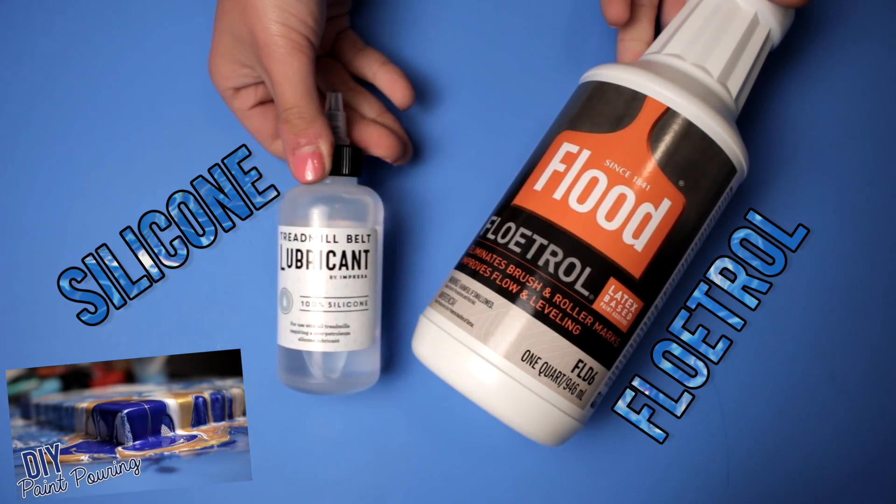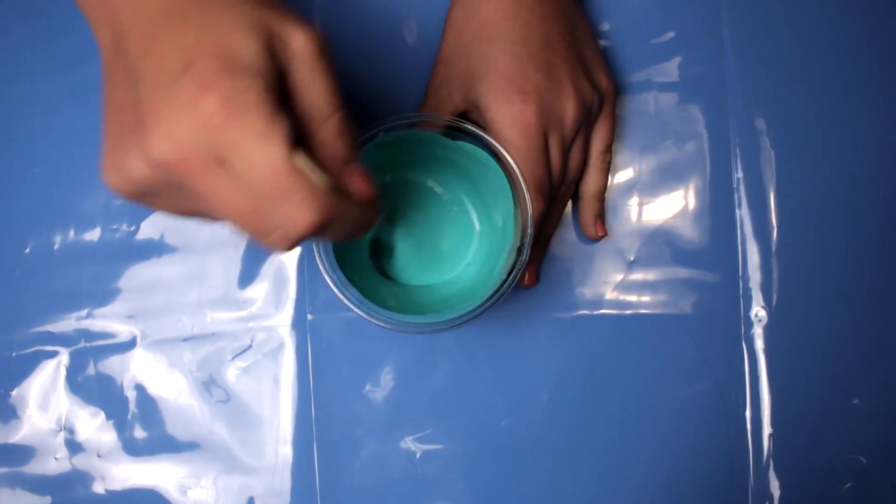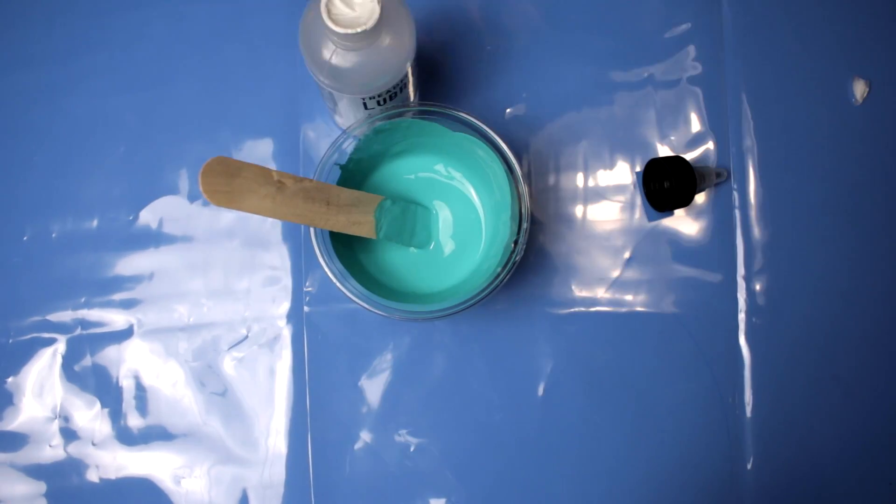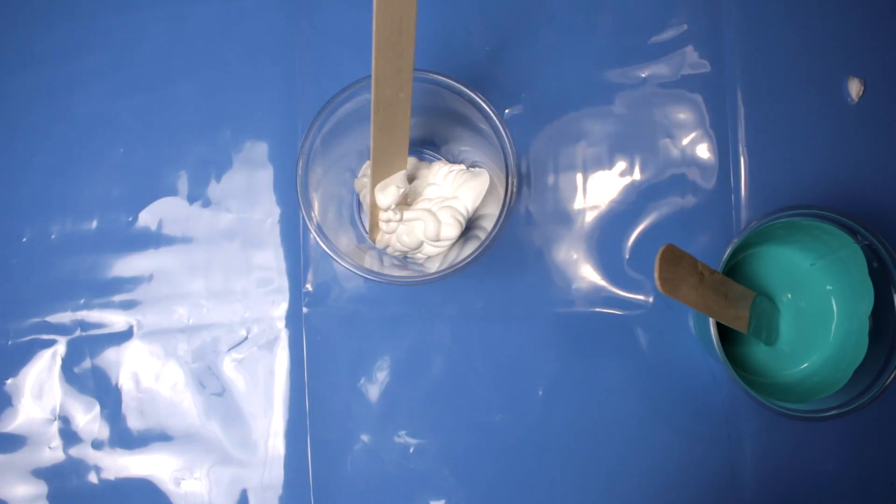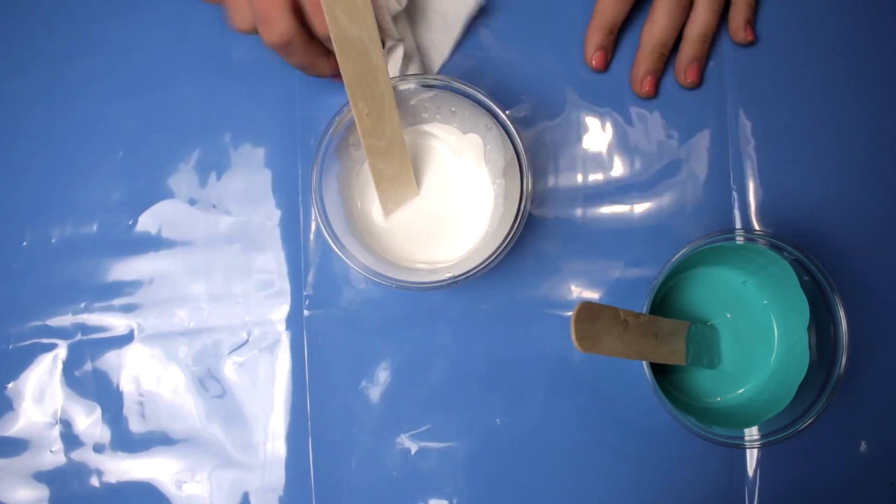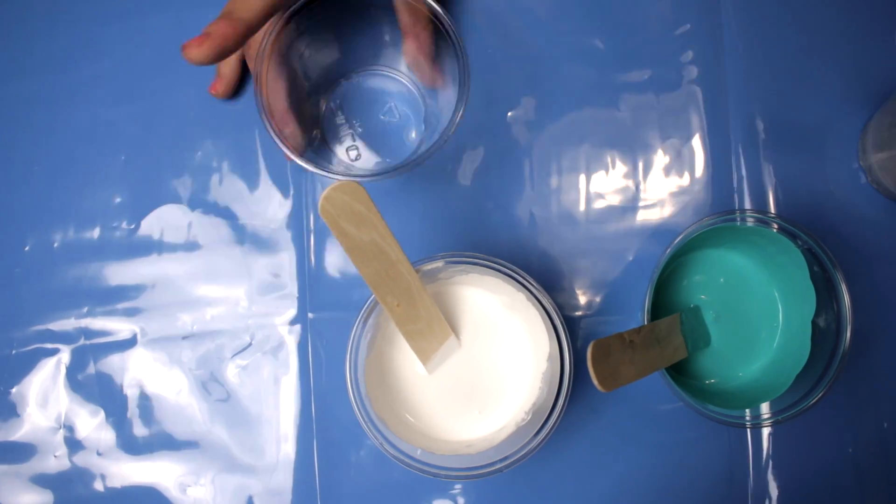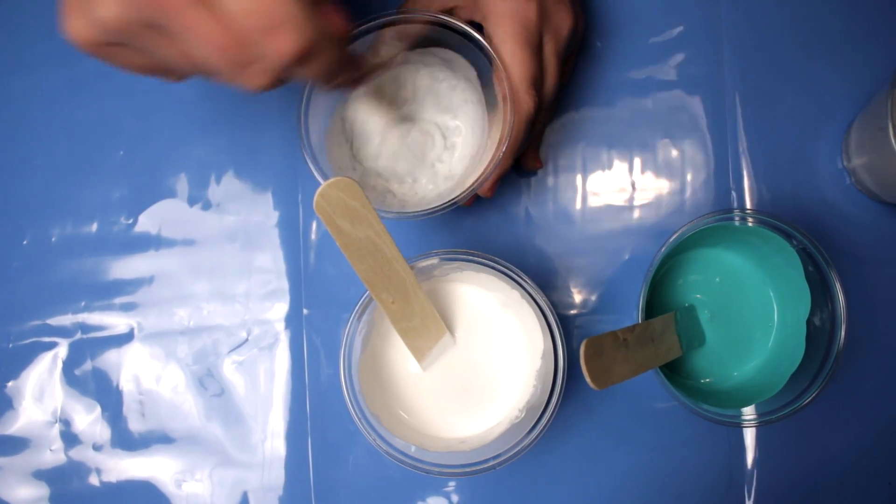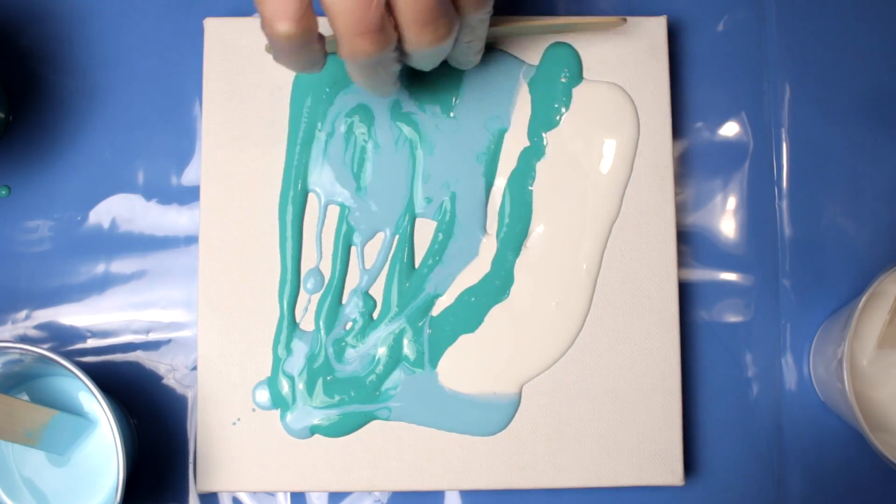For this particular DIY you're gonna need acrylic paint. Just mix and pick and choose which one you want to add your silicone to and which one you want to add your Floetrol to. I added the Floetrol to the white. Don't forget to add water to your paint as well. I noticed with cheap paints it's really watery, but with high quality paints you have to add more water.